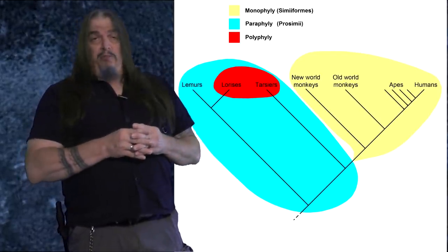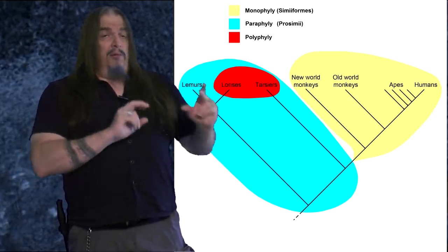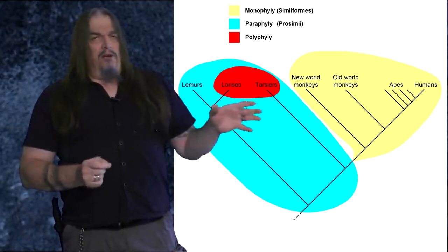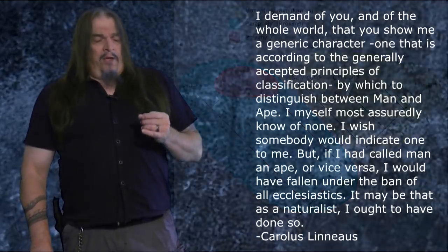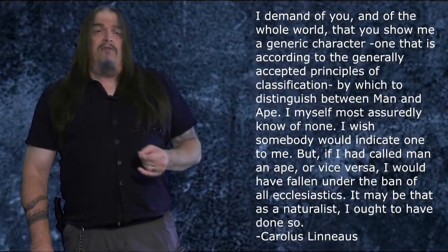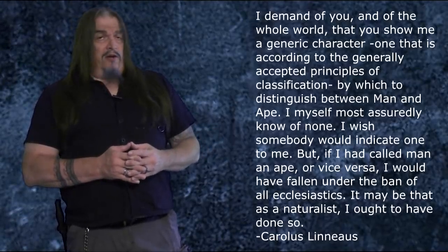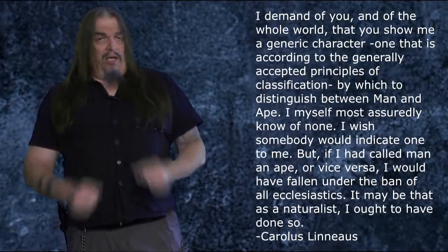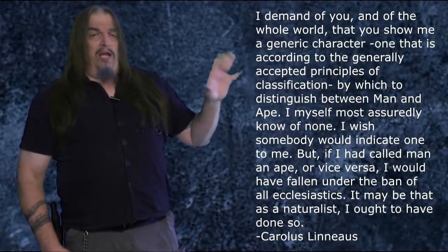Once upon a time, people invented the genus Pongo to encompass all apes except for humans. Some sources even said all hominoids — the Latin word for ape — except humans, which is a Freudian admission that they already know that we are one of them, and it was completely arbitrary. Careless Linnaeus, the creationist who invented taxonomy, challenged the scientific community of his day to show him a generic character by which to distinguish man from ape, because he couldn't tell the difference, and no one else could either. So they made up a bogus category just so that they could say that humans and apes were in different boxes, even when they knew better.